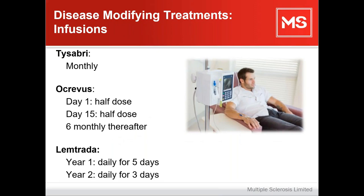For infusions, we have Tysabri, which is a monthly infusion. We also have Ocrevus, one of our newer treatments, usually administered every six months. The first infusion is split in half to minimise side effects: half a dose on day one, then the second half on day 15. Following that, the drug is infused every six months as a day infusion — no overnight hospital stay required, usually done in an infusion centre or outpatient department.